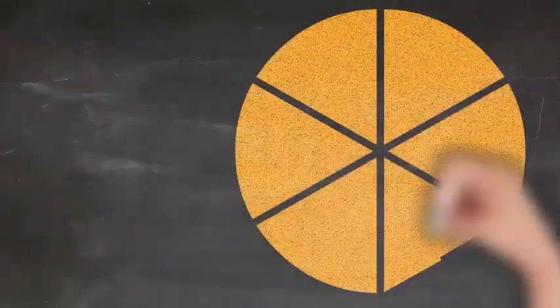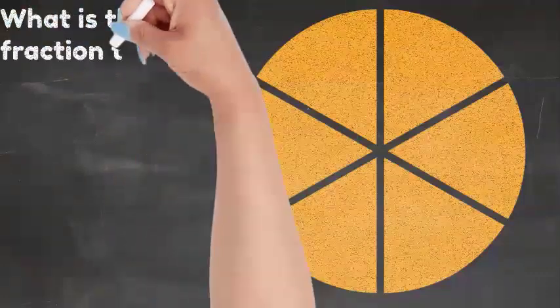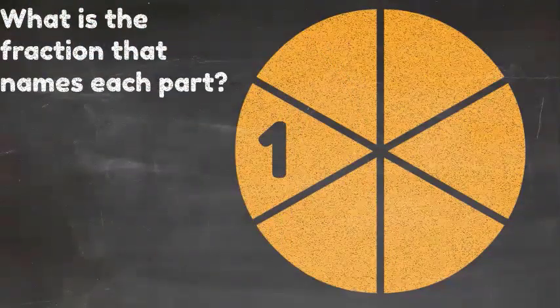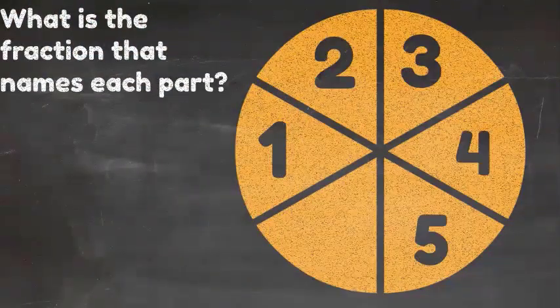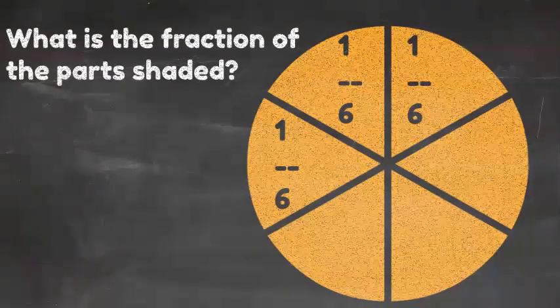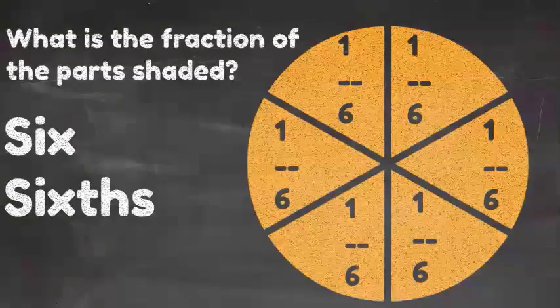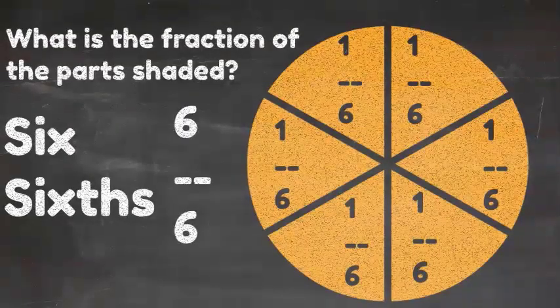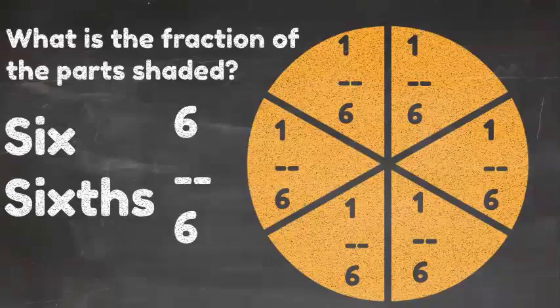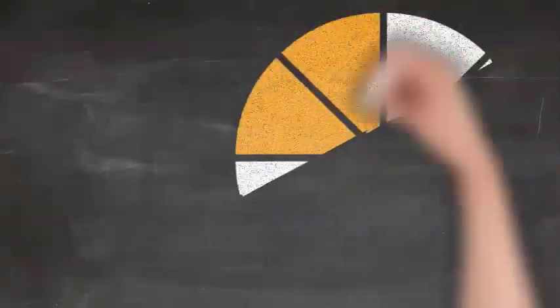And for this fraction, let's count the equal parts. First, we have to figure out what is the fraction that names each part. Well, there are six equal parts, so the fraction that names each part would be one-sixth. Now, since all parts are shaded, six-sixths is my fraction. Six as the numerator, six as the denominator.